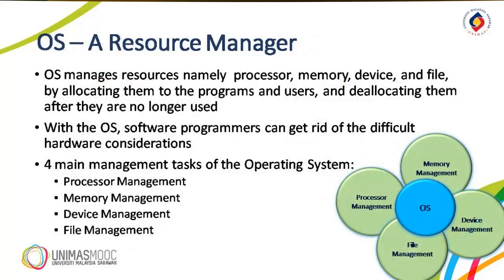As mentioned previously, the OS is a resource manager. OS manages resources namely processor, memory, device, and file by allocating them to programs and users and de-allocating them after they are no longer used. With the OS, software programmers can get rid of difficult hardware considerations. With these four resources, there are four main management tasks of the operating system: processor management, memory management, device management, and file management.